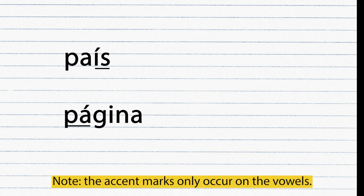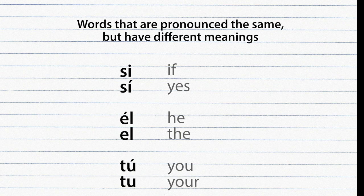Another example: a word with three syllables — if it followed the rules the stressed syllable should be on the second to last, but the accent mark tells us otherwise. Accent marks only appear on vowels. Another important use of accent marks is to differentiate between words that are pronounced the same but have different meanings.